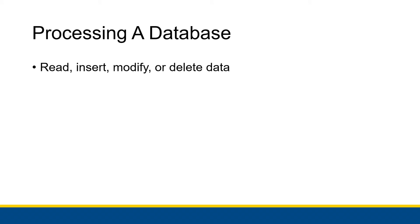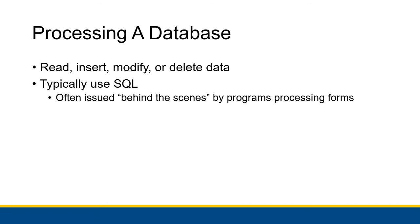For example, a professor might modify a grade that was recorded as zero after finding the assignment was graded incorrectly. In that case, they would modify the database so that grade is no longer zero but reflects the actual score. Deleting data might occur if a student drops the class — that would be getting rid of that entire row. Typically this is done through SQL — either MySQL or the Microsoft version — issued behind the scenes by programs processing forms, assembling a SQL command and sending it to the database management system to implement.